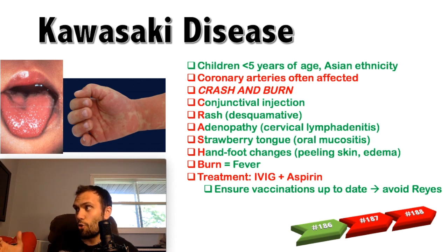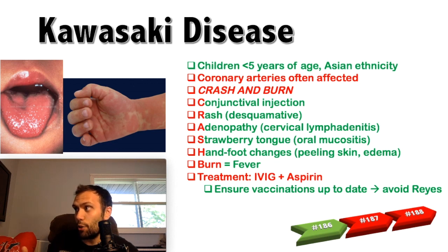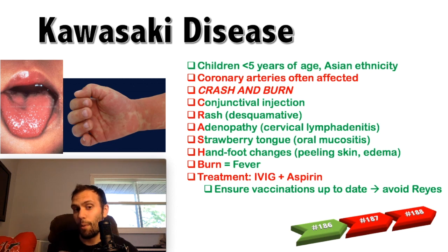The S in CRASH and BURN is strawberry tongue and oral mucositis — very few diseases present with strawberry tongue. The H is hand-foot changes, including peeling skin and edema. The BURN refers to fever, which is probably the most important symptom.